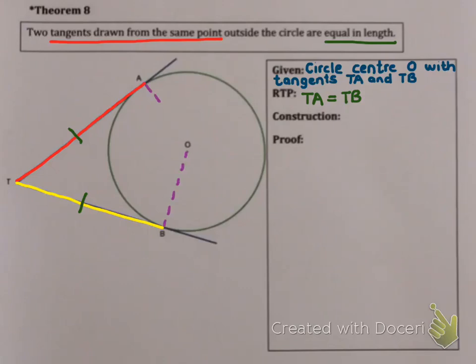Now there's two constructions. The first construction is radii OA and OB. Now as soon as I say radii, alarm bells should start ringing off. This means that these two lines will be equal in length because they're radii of the circle. And as soon as I'm thinking about tangents and radii, I need to remember Theorem 7, which says that tangents and radii are always perpendicular at the point of contact.